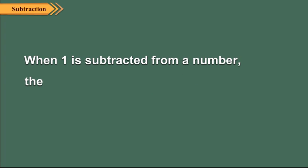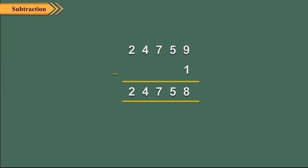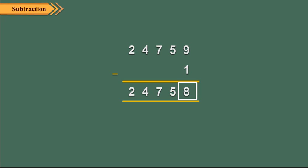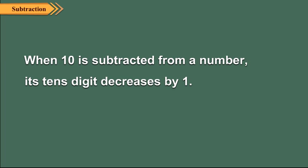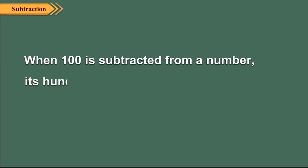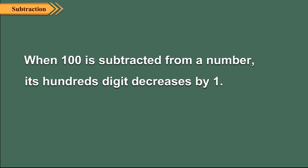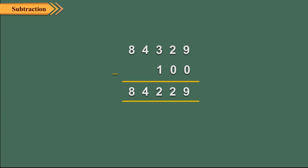When 1 is subtracted from a number, the ones digit decreases by 1. For example, on subtracting 1 from 24759, the ones digit becomes 8. When 10 is subtracted from a number, its tens digit decreases by 1. For example, on subtracting 10 from 43842, the tens digit becomes 3. When 100 is subtracted from a number, its hundreds digit decreases by 1. For example, on subtracting 100 from 84329, the hundreds digit becomes 2.